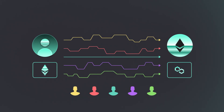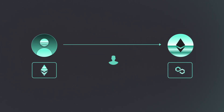There are many execution paths they could take, each varying in cost, speed, and security. This creates an opportunity for third-party entities to compete to provide the best execution path for the user, and fulfill their intention on the destination chain.